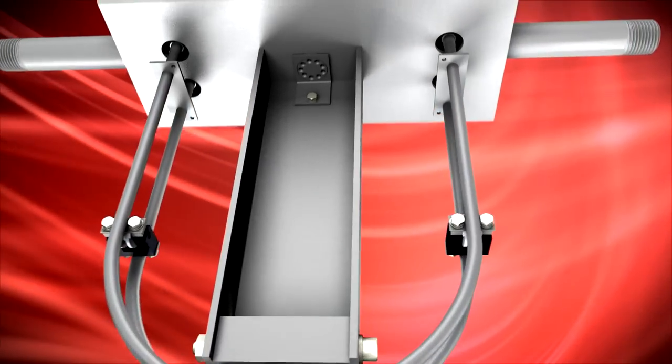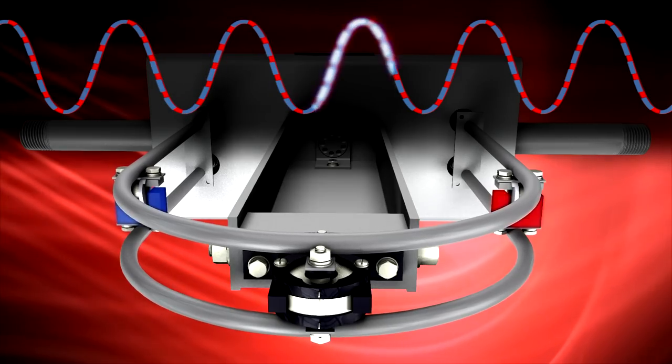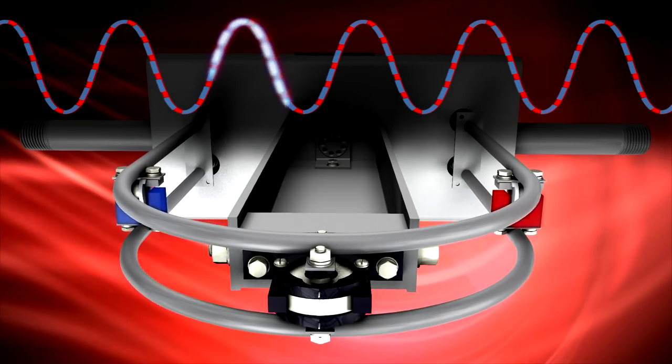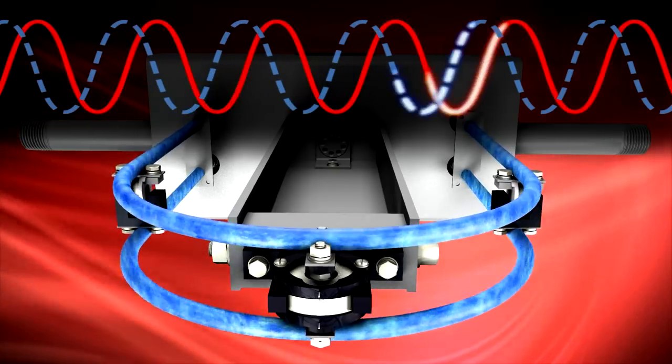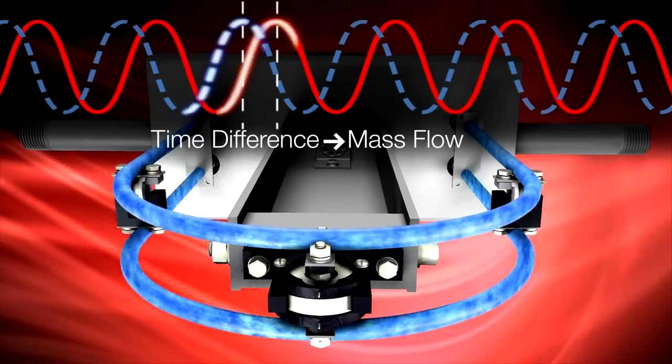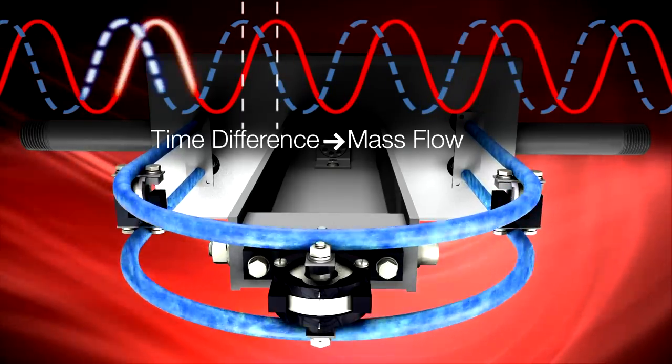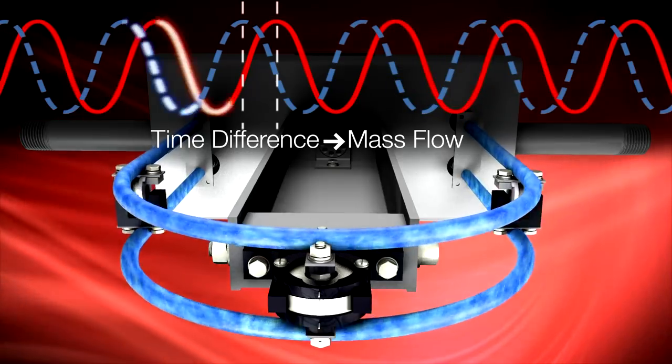Let's take a look at how the meter operates. A driver coil causes the tubes to vibrate at their resonant frequency. As fluid flows through the resonating sensor tubes, forces induced by the mass flow cause the tubes to twist, creating a phase shift between two millivolt sine waves. The time delay between the two sine waves is directly proportional to mass flow rate.